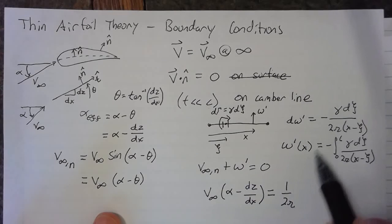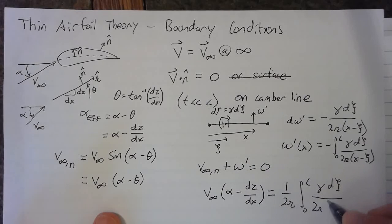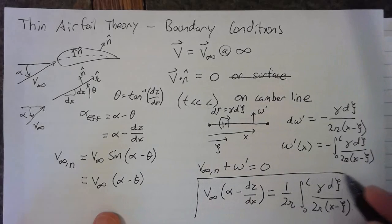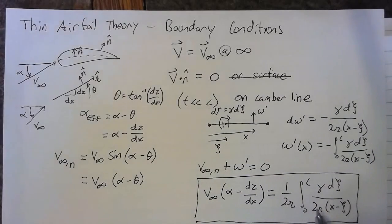And we're simply moving this to the other side and getting rid of this negative. Integral from 0 to c, gamma d xi over x minus xi. And this equation that we've just written out is going to be the thin airfoil equation that governs the rest that we do in this.